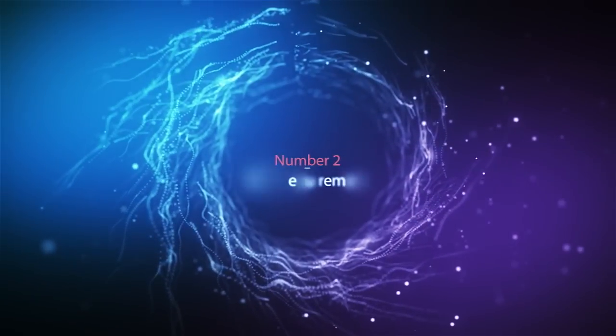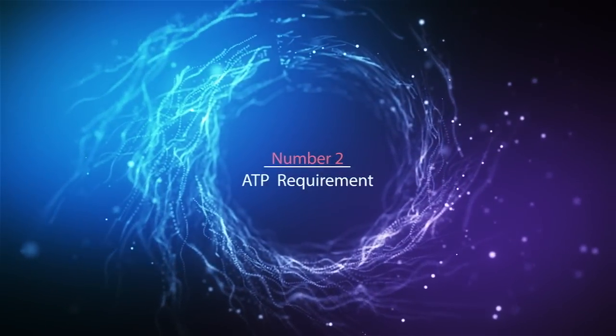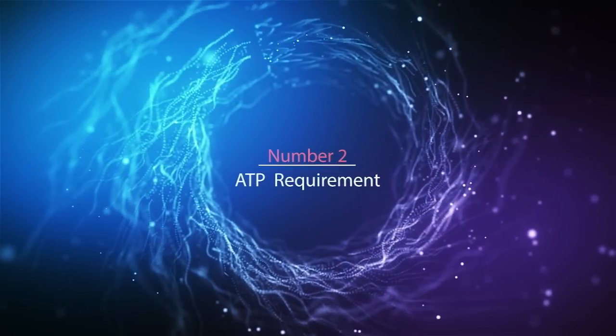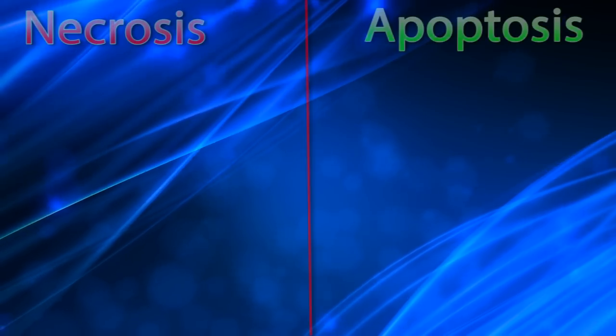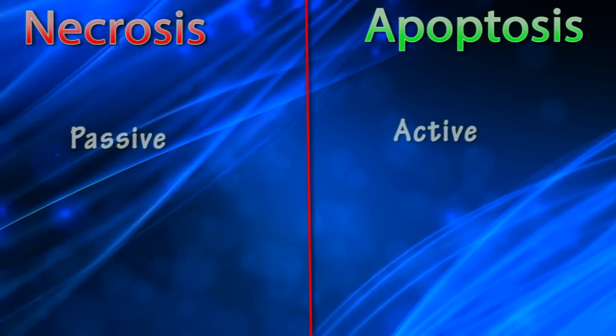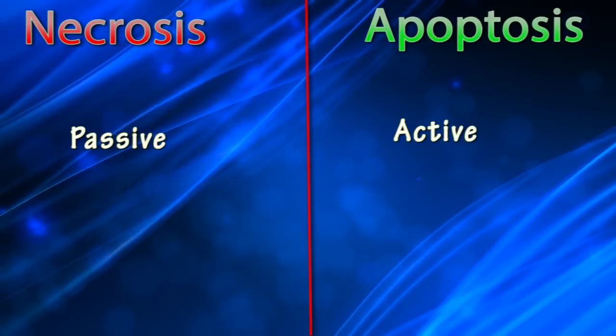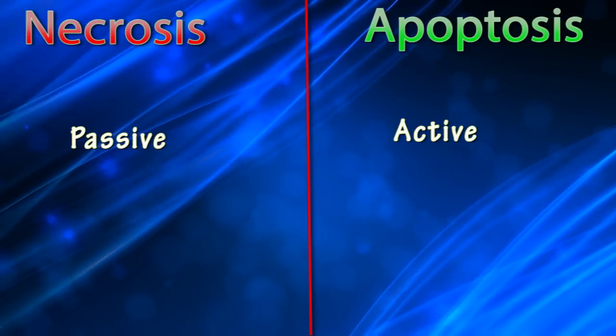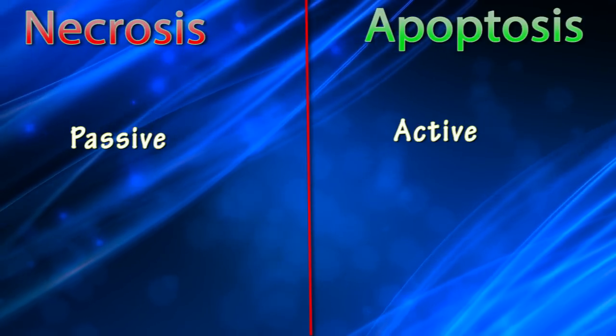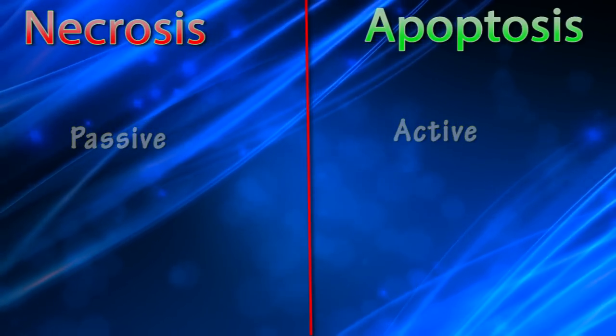Difference number two: ATP requirement. The necrosis process does not require ATP, but ATP is needed for the apoptosis process.